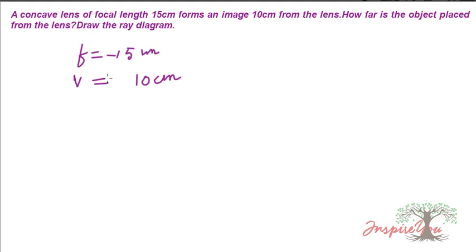For a concave lens, the image is formed on the same side as the object, so the image distance is negative: v equals minus 10 centimeters. We need to find the object distance u.